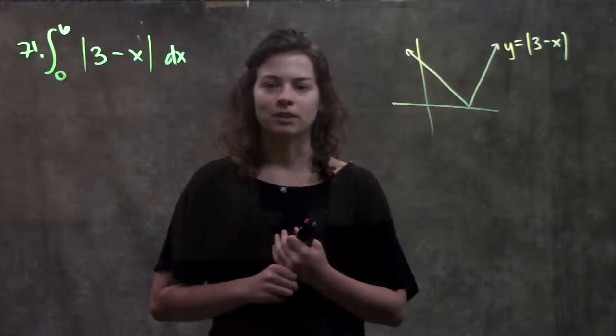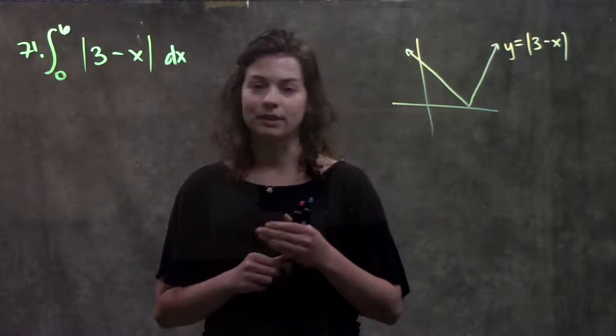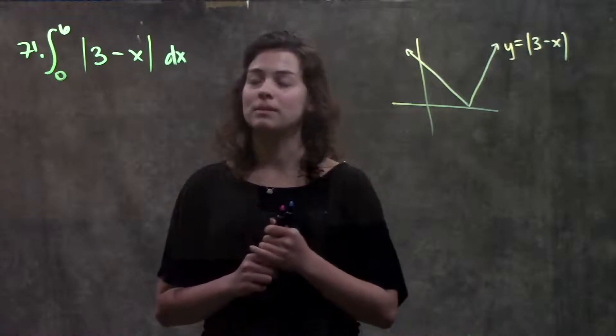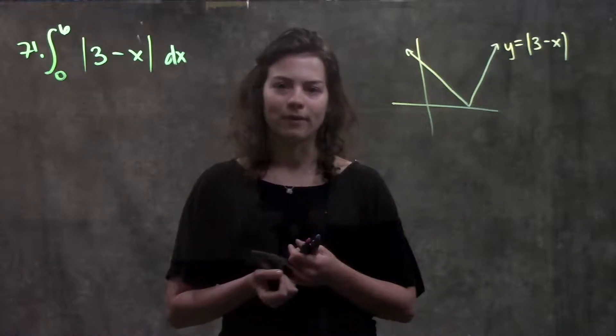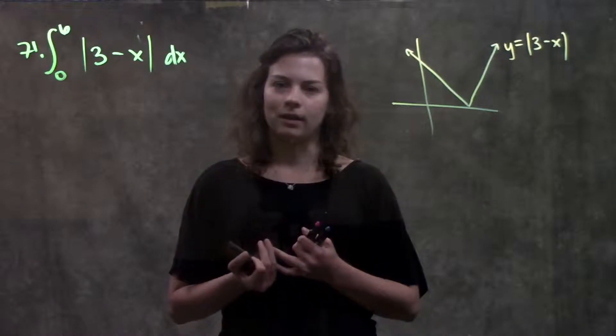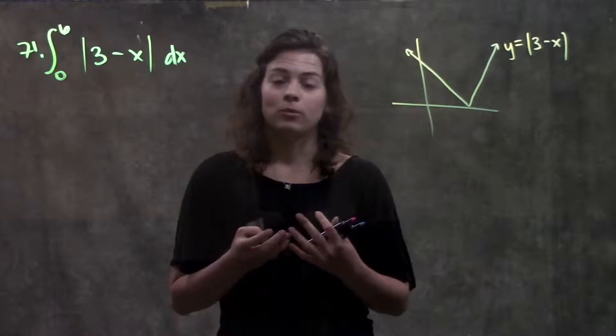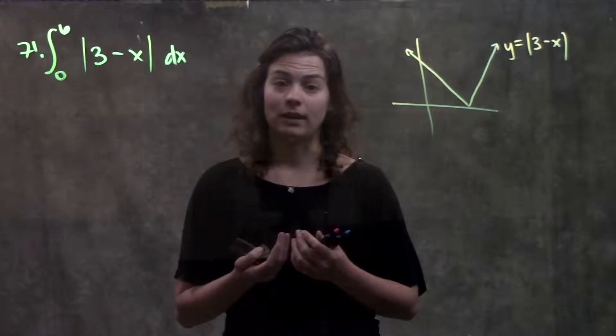So 71 gives us this function. It's interested in the integral from 0 to 6 of the absolute value of 3 minus x. I would like to just go ahead and take the integral of this function, but I have a problem here. I have an absolute value sign, and I don't have any rules for how to take the integral of an absolute value.